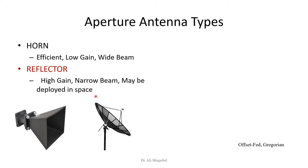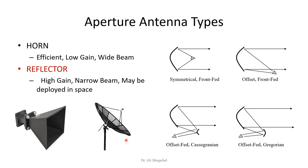Efficiency in terms of eta is relatively good for horns, but gain G is relatively small and the beam is wide — they're not very directional. For reflector antennas they have high gain, narrow beam, and may be deployed in space and many applications — we see this in labs and in mobile wireless and satellite applications. The picture on the right shows different ways of connecting the feeder: it could be center symmetric front feed, offset feed, or other types.